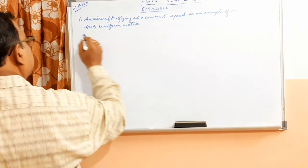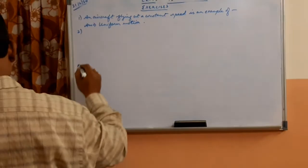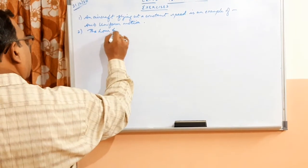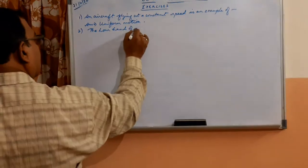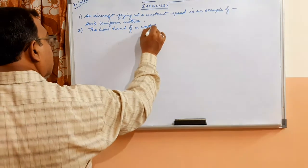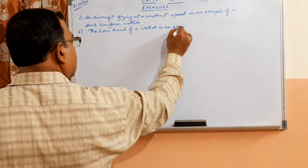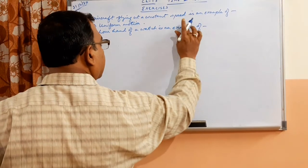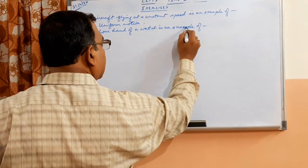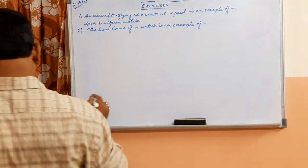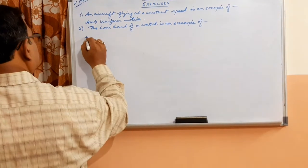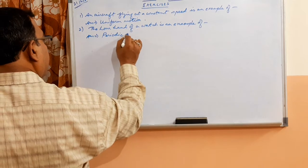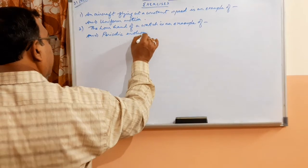Number 2: the hour hand of a watch is an example of... Answer is periodic motion.